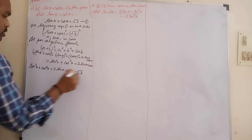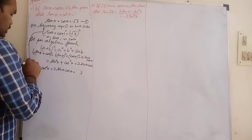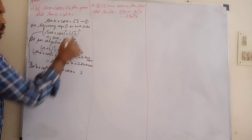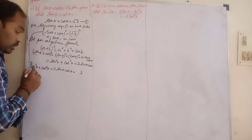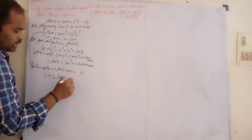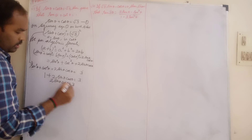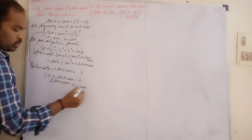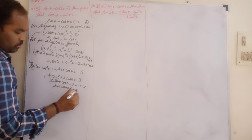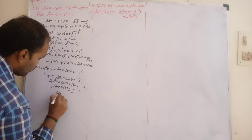The right-hand side, root 3 whole square, is 3. Applying the trigonometric identity sin²θ + cos²θ = 1, we get 1 + 2·sin θ·cos θ = 3. So 2·sin θ·cos θ = 3 - 1 = 2. Therefore sin θ·cos θ = 2 ÷ 2 = 1. We have now established that sin θ·cos θ = 1.